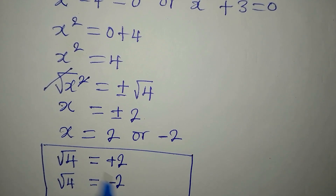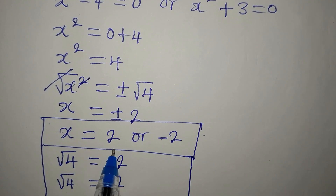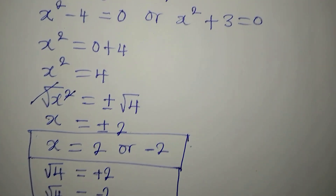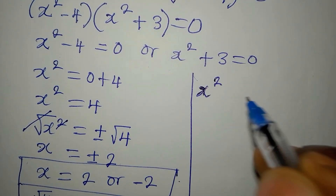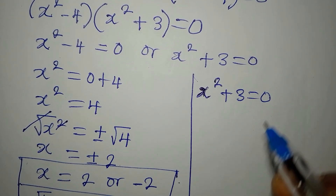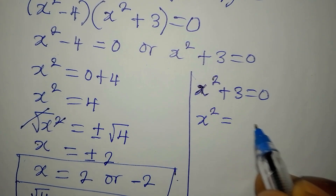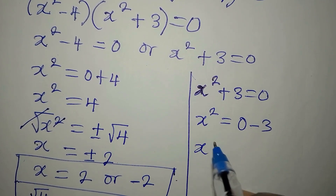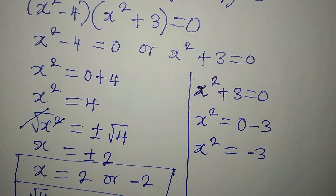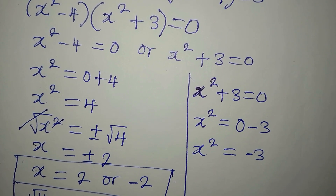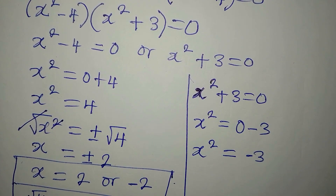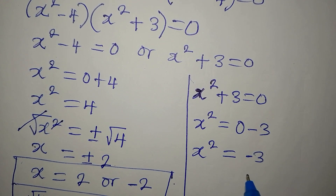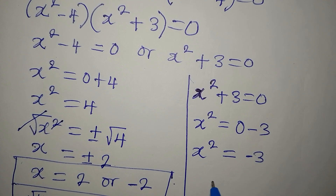So we have two solutions already: x equals 2 or minus 2. Now let's go back to x squared plus 3 equals 0. This means x squared equals negative 3. Ordinarily you should know this will not give us a real solution, because we have a negative value on the right. But we still need to take the square root of both sides.